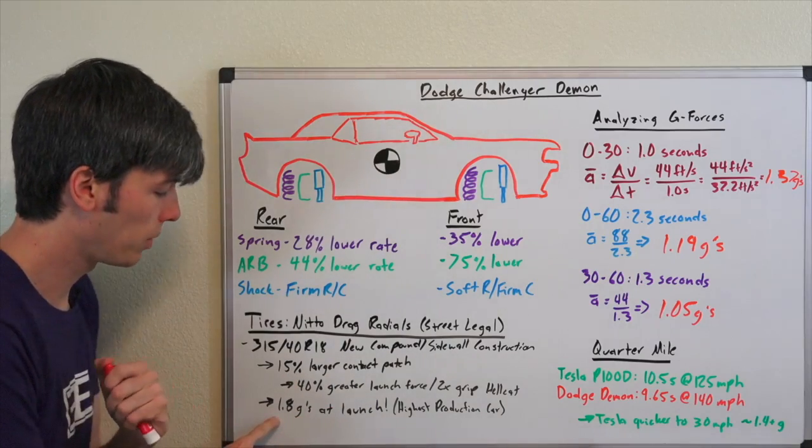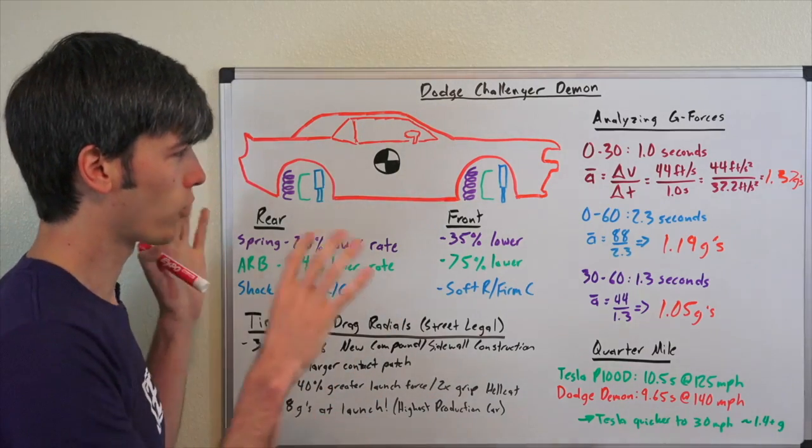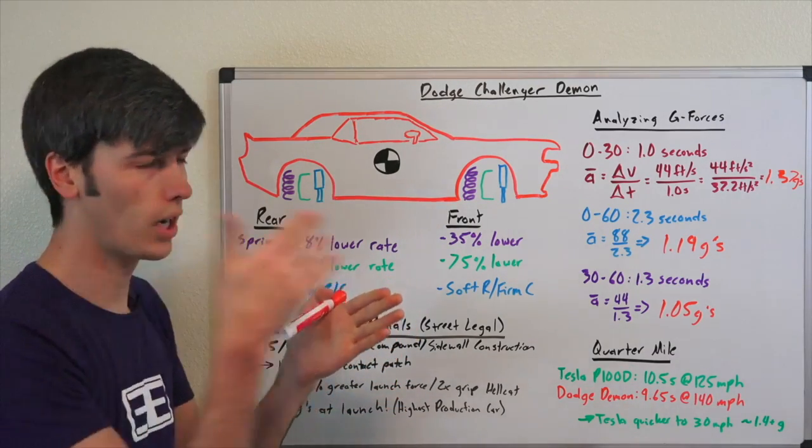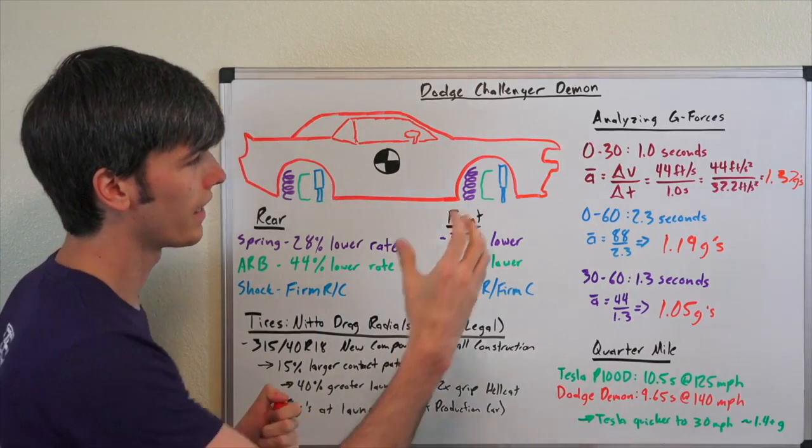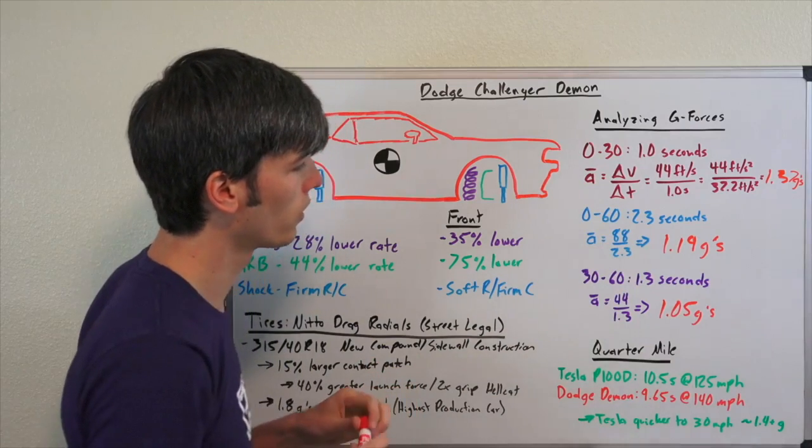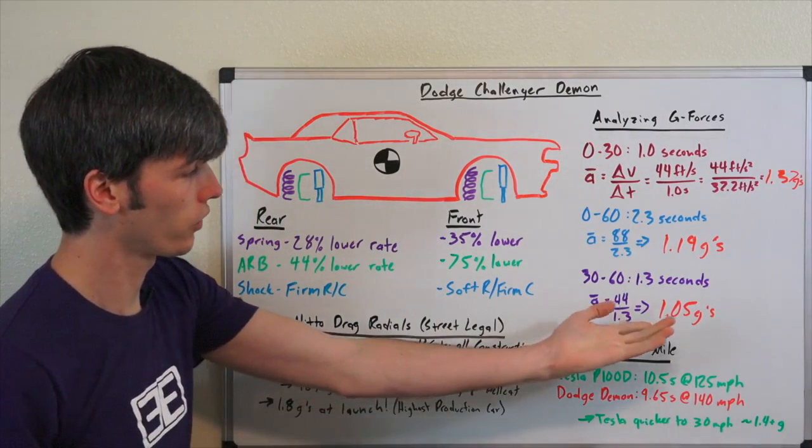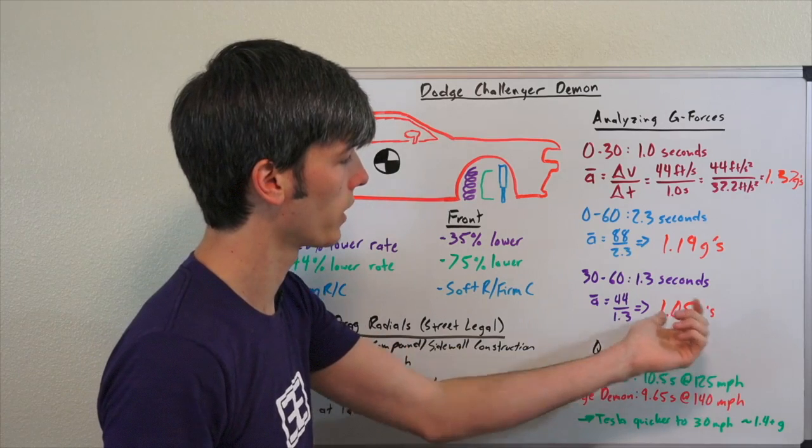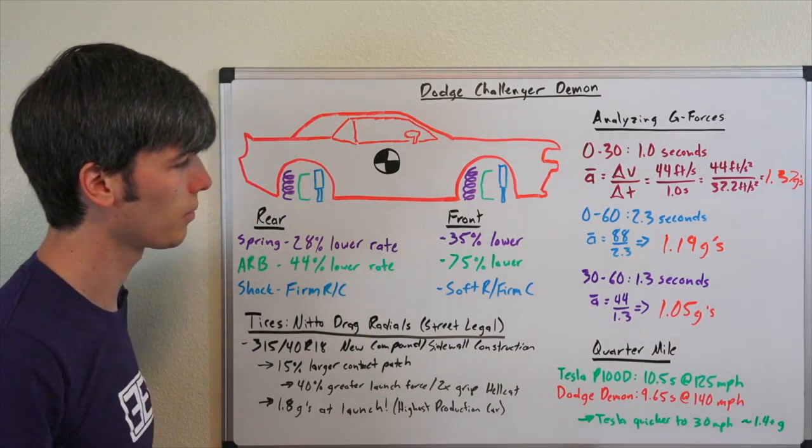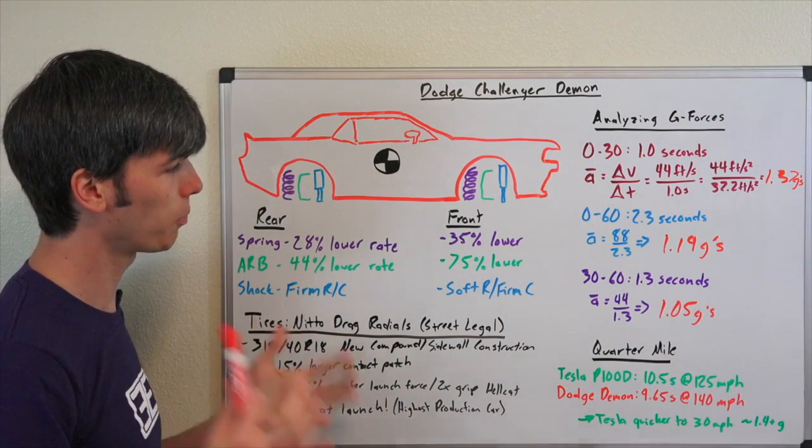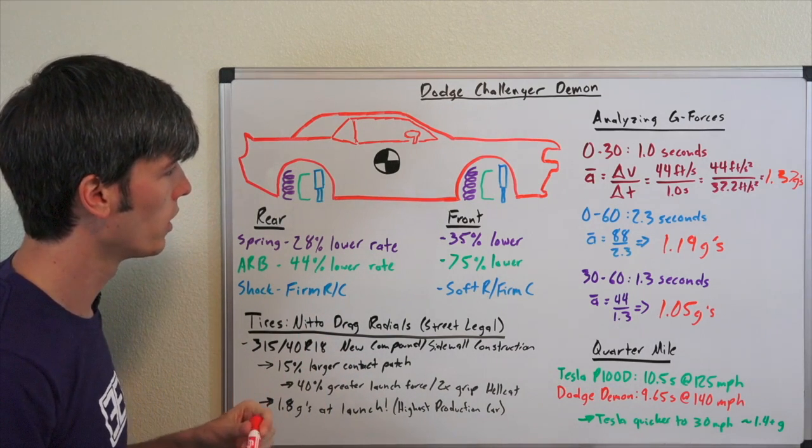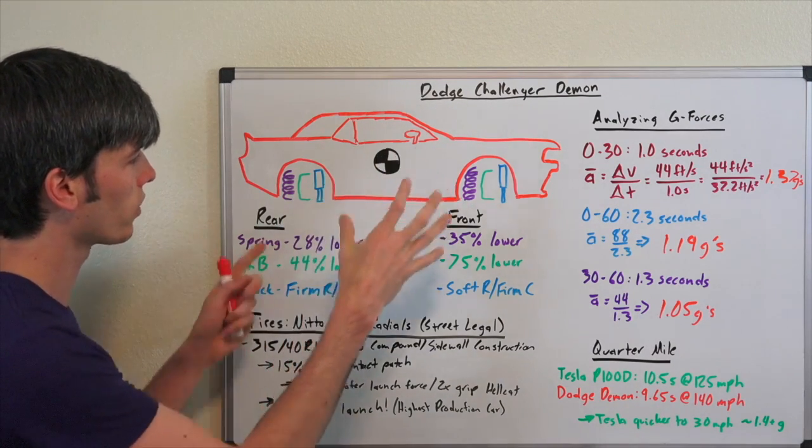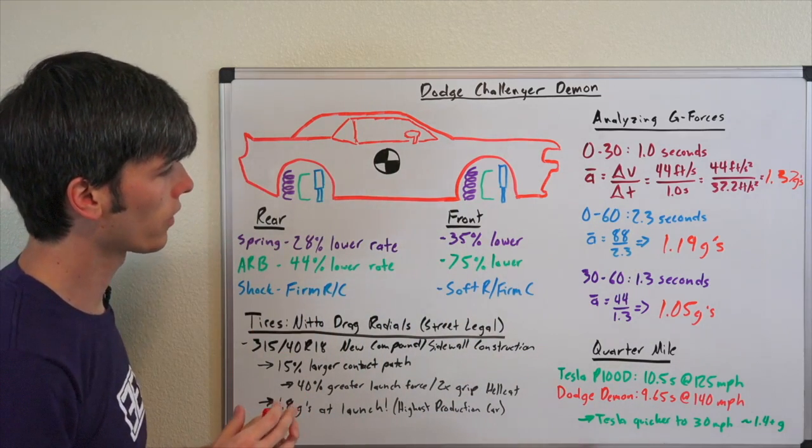Dodge is claiming a peak G-force of 1.8 G's. That's right at the initial launch, kind of this shock of acceleration right at the very beginning, very brief moment. Then you can see the average G-force is going to be much lower. Still extremely impressive, the fact that it's accelerating over 1 G from 30 to 60 miles per hour is pretty insane, especially for a rear wheel drive vehicle. Very cool what they've been able to do with these super sticky tires and the soft suspension to get that rear axle loaded up.